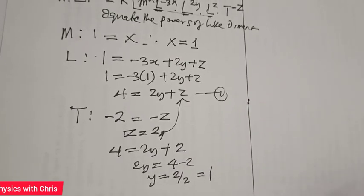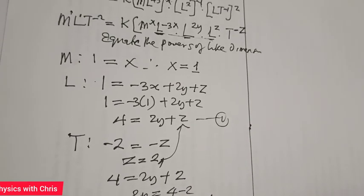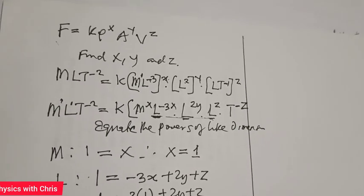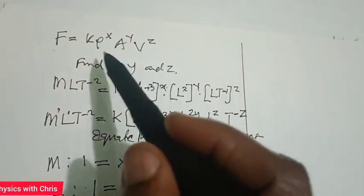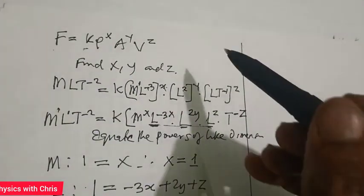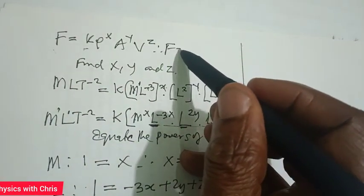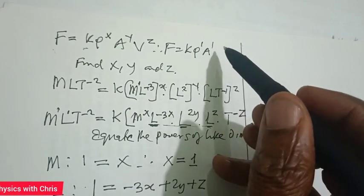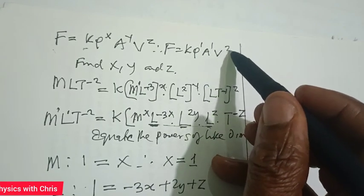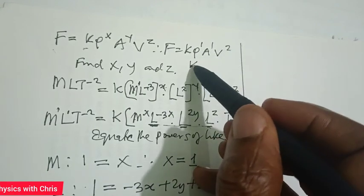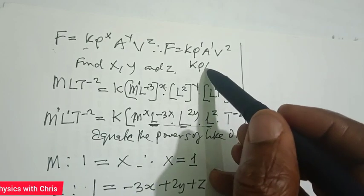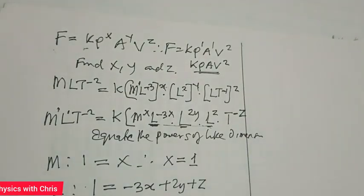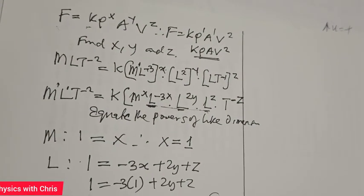With constants x = 1, y = 1, and z = 2, we can replace them in the equation to get the exact form. K is dimensionless, so F = K × ρ¹ × A¹ × v², giving F = K × density × area × speed squared, where K is a dimensionless constant.